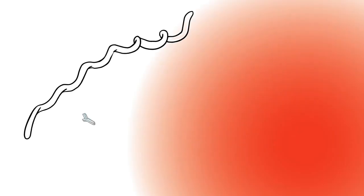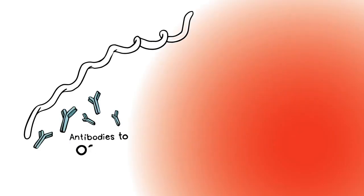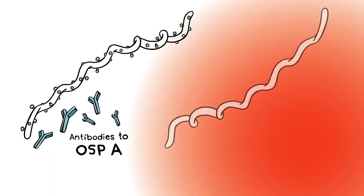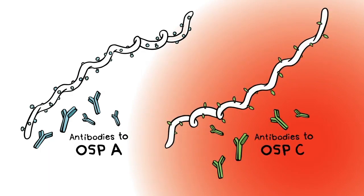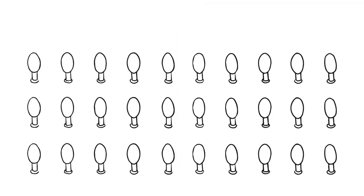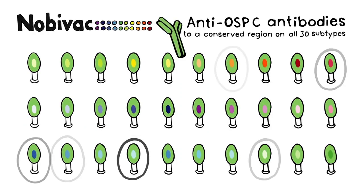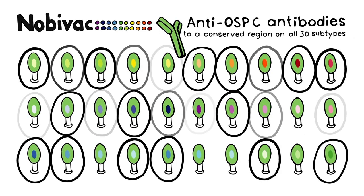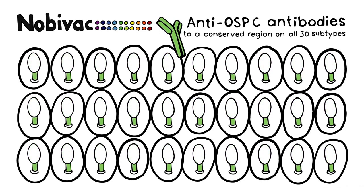Nobivac Lyme provides robust protection against OSP-A expressing bacteria, but also broad protection against OSP-C by stimulating antibodies to a conserved region of OSP-C. This region is common to all 30 recognized subtypes. This is how Nobivac Lyme delivers quality protection against Lyme disease.